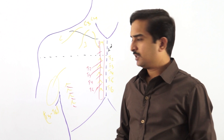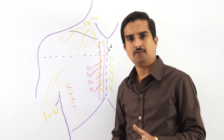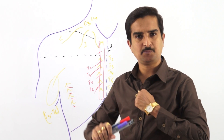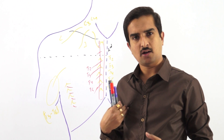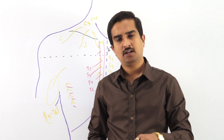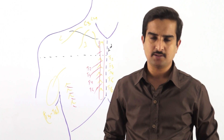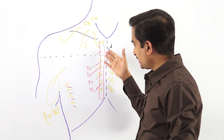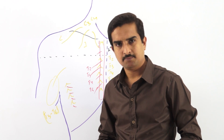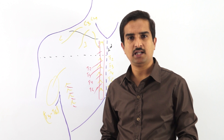The perforating branches of the internal thoracic artery supply the anterior and anteromedial aspect of the thoracic region — or we can say these are the cutaneous vessels which supply the anterolateral aspect of the pectoral region. These perforating branches are accompanied with the anterior cutaneous nerves.